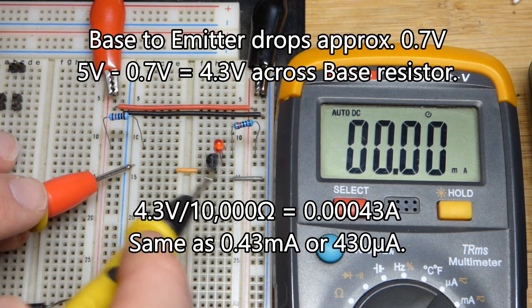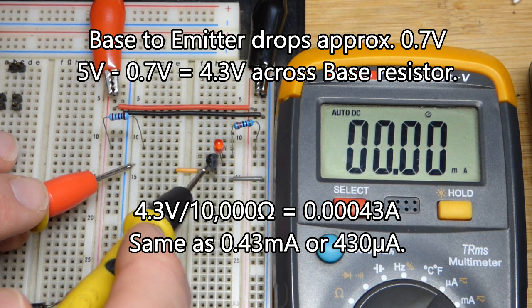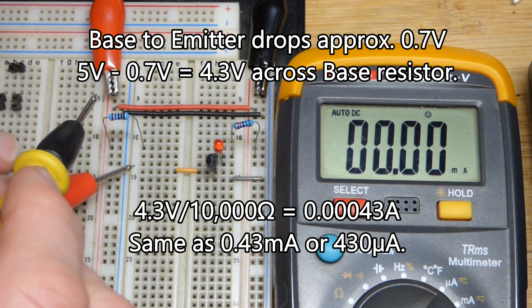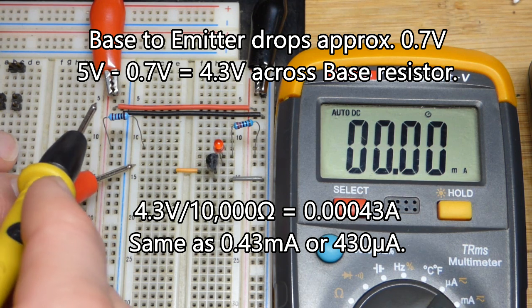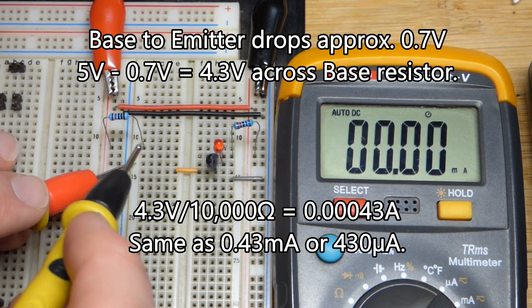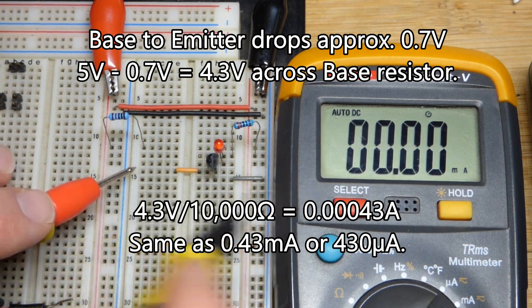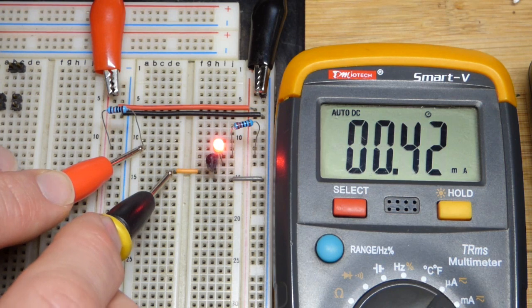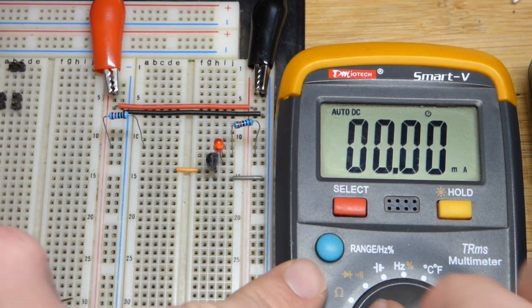We just need to get that little current trickling through the base to emitter, drops about 0.7 volts in that direction right there. So five volts minus 0.7 would be about 4.3 divided by ten thousand would be 0.43 milliamps. I think that's probably good enough.